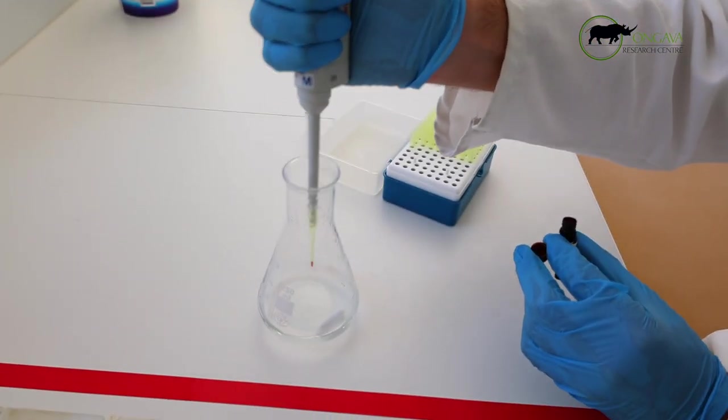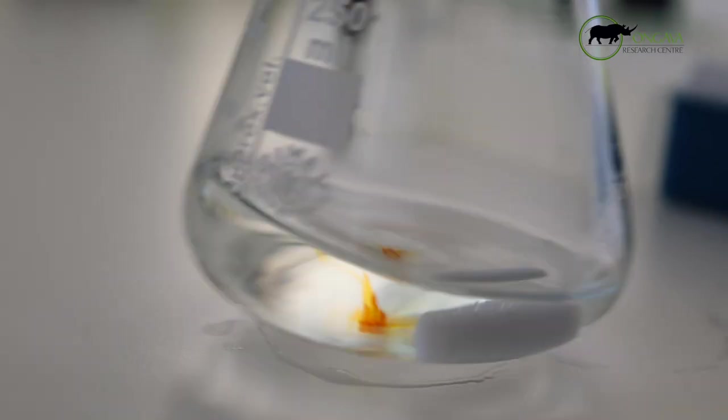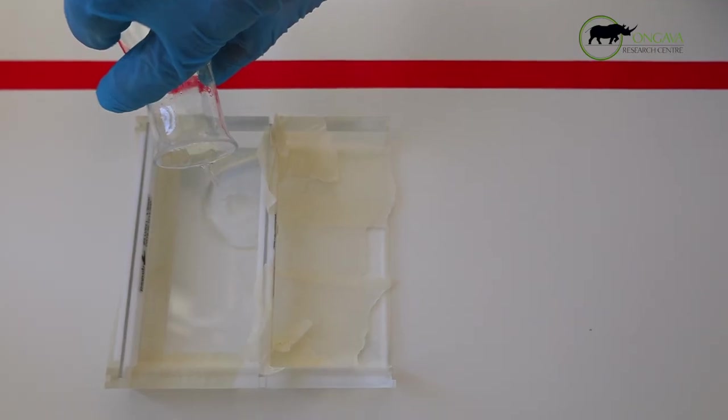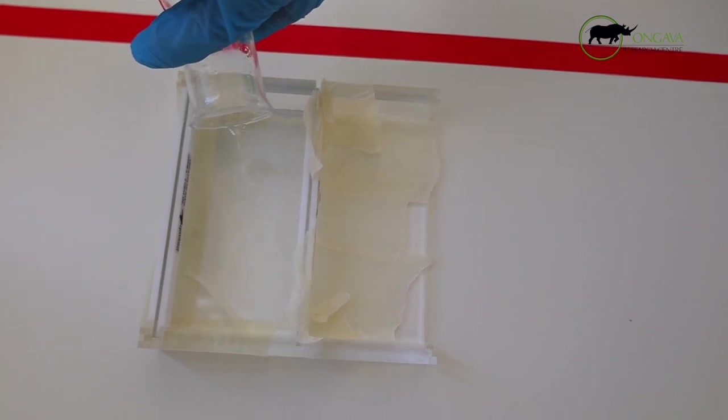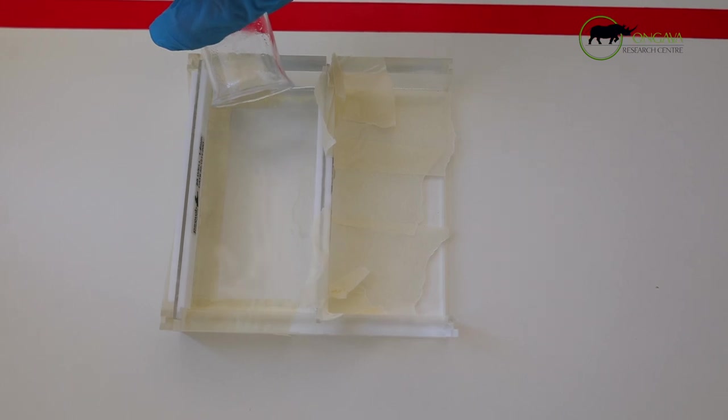An agarose gel is one that we'll be setting up in a bit. We load this DNA sample together with a loading dye, as well as a fluorescent activator that will be inside the gel.